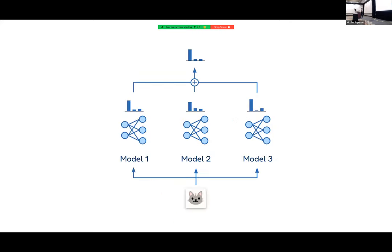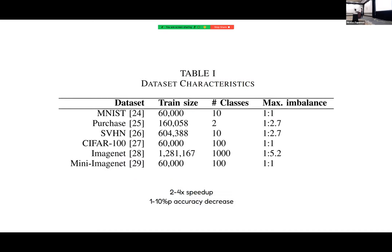At inference time, you assemble the models and use the final prediction. SISA was published in 2020, and the authors measured an average speedup of between two and four times compared to retraining from scratch.